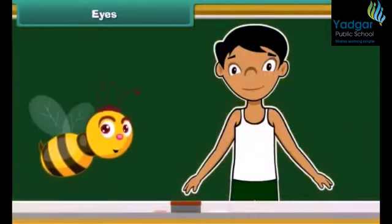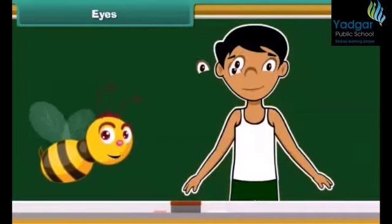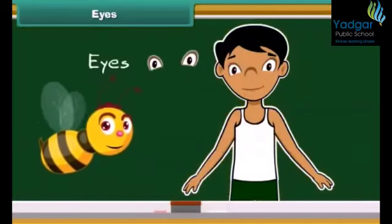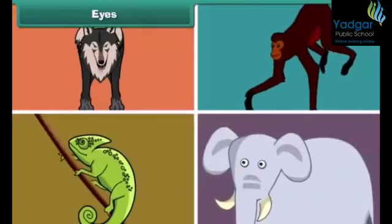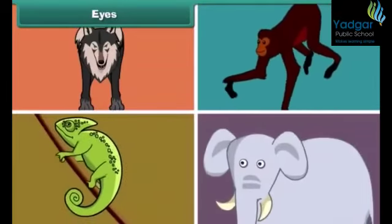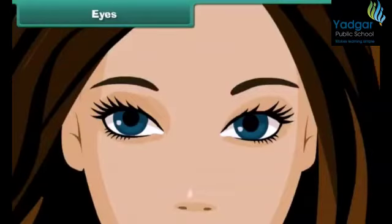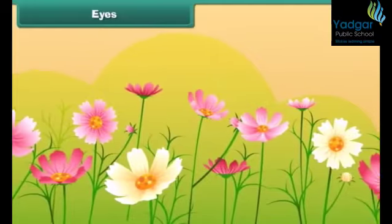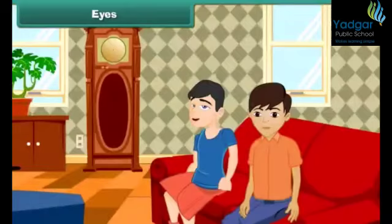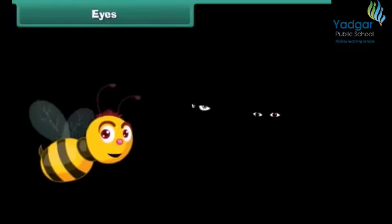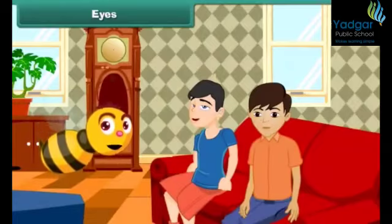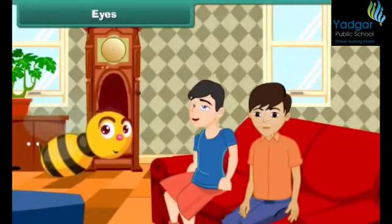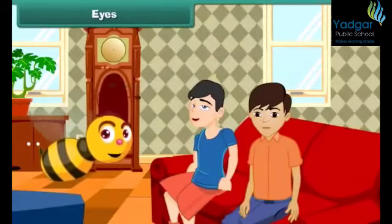The first sense organ of our body is our eyes. All living creatures have a pair of eyes on their face. Eyes are the organs of sight; they help us view and identify different things around us. We are not able to see objects in a dark room because light is required by our eyes to view objects.